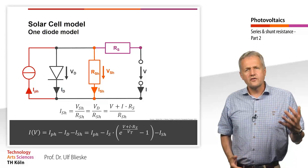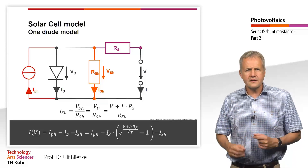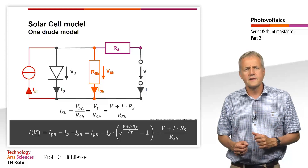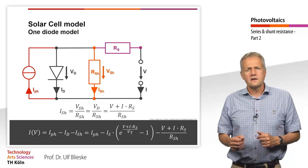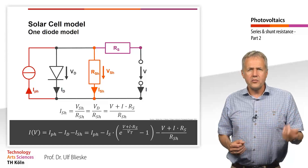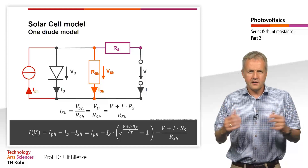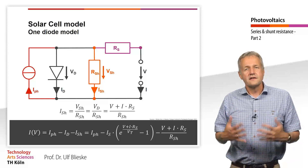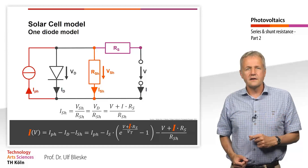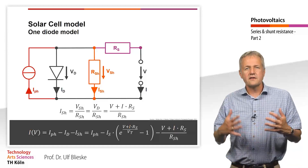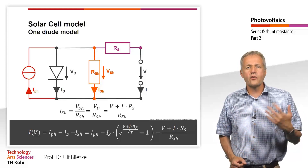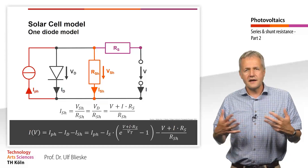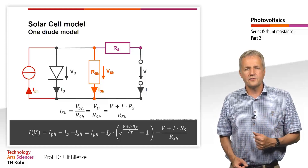The total current through the solar cell can now be described by the equation shown at the bottom. It is now much more complicated than the case of the ideal diode, of course. Since the overall current I appears on both sides of the equation, this equation can no longer be solved analytically. Instead, numerical methods are used.